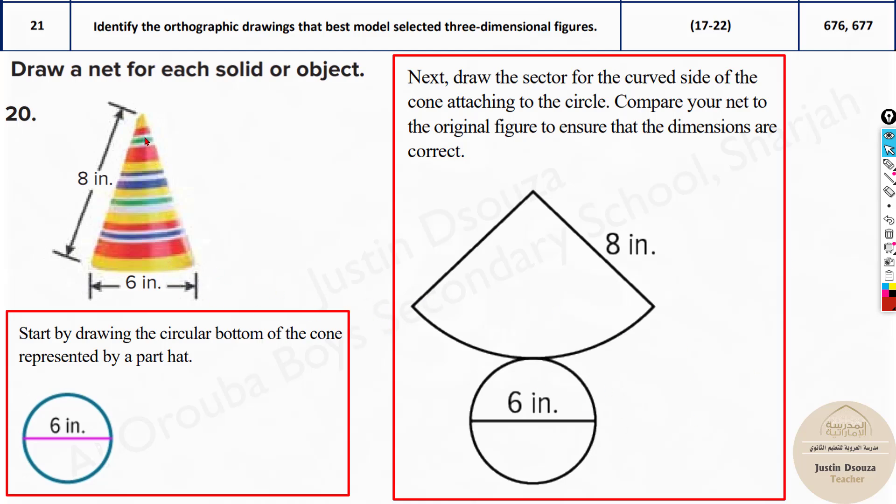It depends on the dimensions. This is 8 inches and this is however long it is. It won't be a circle, obviously, because when you open it up, if you have a cone, just cut it out and open it up. And you will realize this is what you can see.